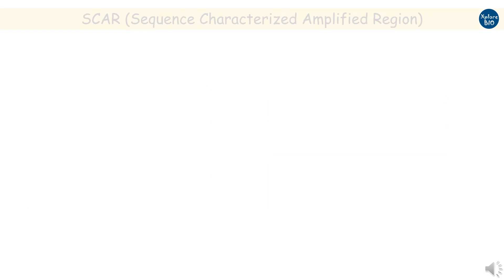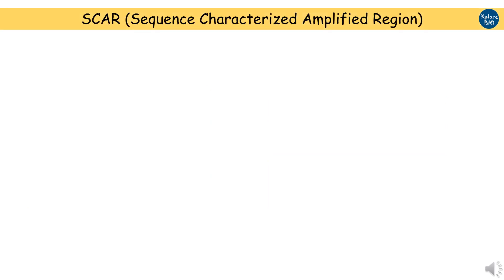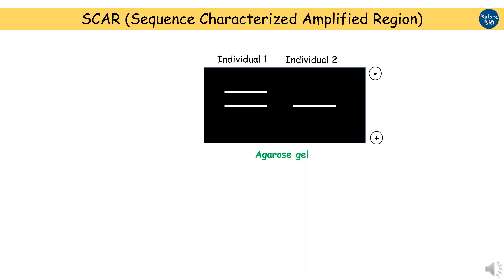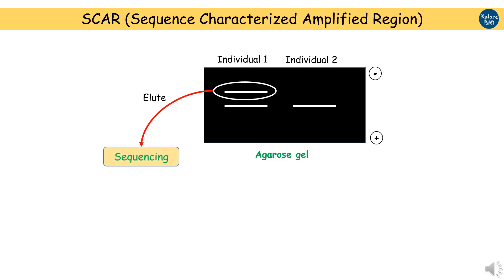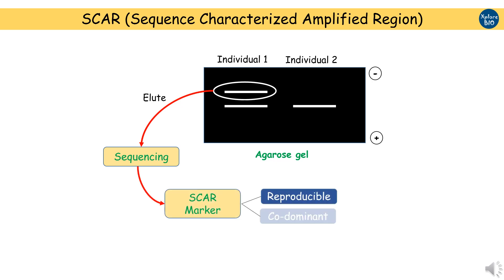The above problems can be overcome by developing SCAR markers. SCAR, or sequence characterized amplified region markers, are designed by cutting a specific polymorphic band from a RAPD gel, sequencing it, and then designing a more template-specific primer. Therefore, they are reproducible and co-dominant.